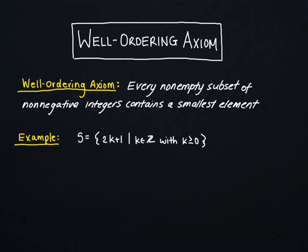The well-ordering axiom states that every non-empty subset of non-negative integers contains the smallest element. So if we have any collection of integers, there has to be a smallest element if every element in that set is positive.